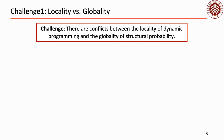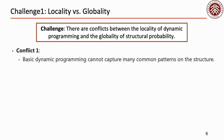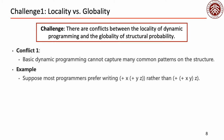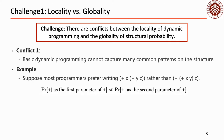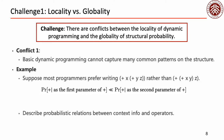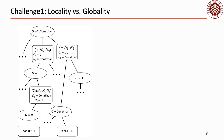The first challenge is that dynamic programming is local but structural probability is global, and thus two conflicts emerge. The first conflict is that many common patterns on the structure cannot be captured by dynamic programming. For example, most programmers may prefer to write the concatenation of three strings right-associatively rather than left-associatively. Such a pattern means the probability for string concatenation to be used as the first parameter of another concatenation is much smaller than as the second parameter. However, due to the reuse mechanism, basic dynamic programming cannot capture context information at all.